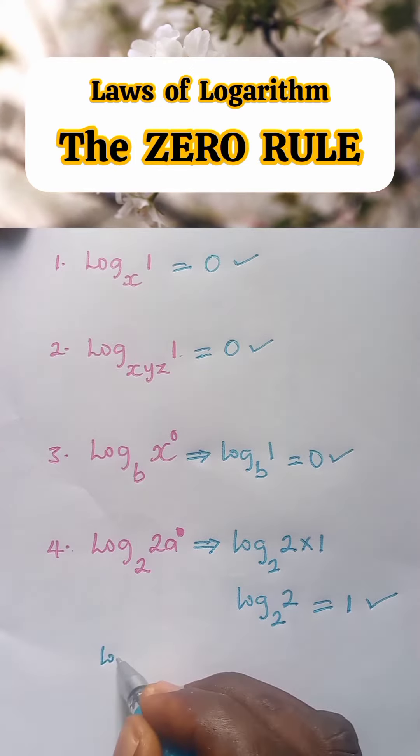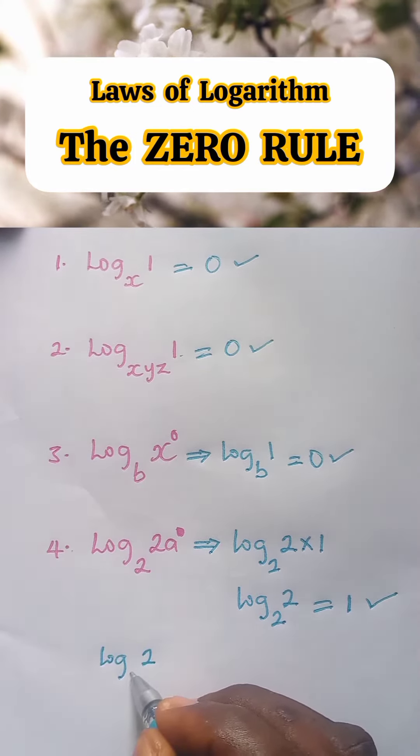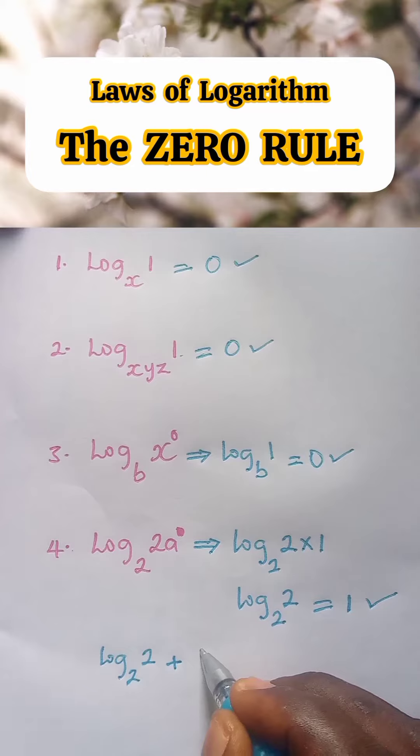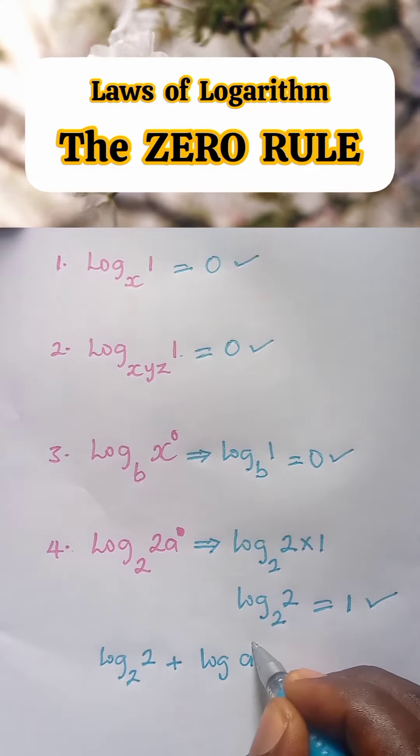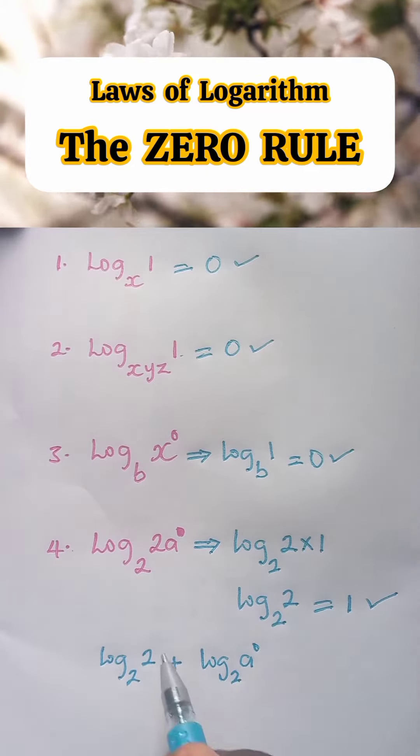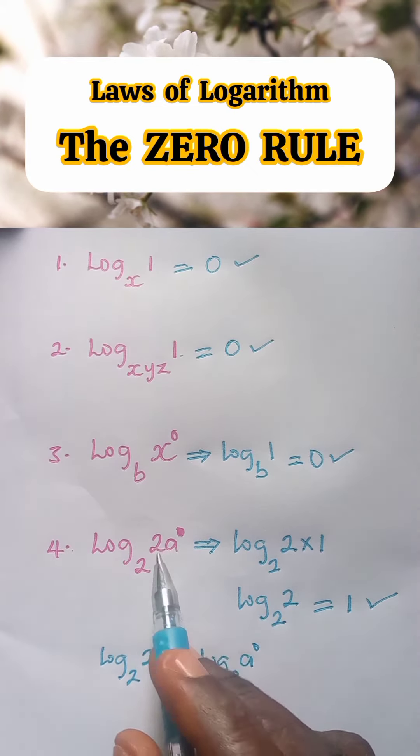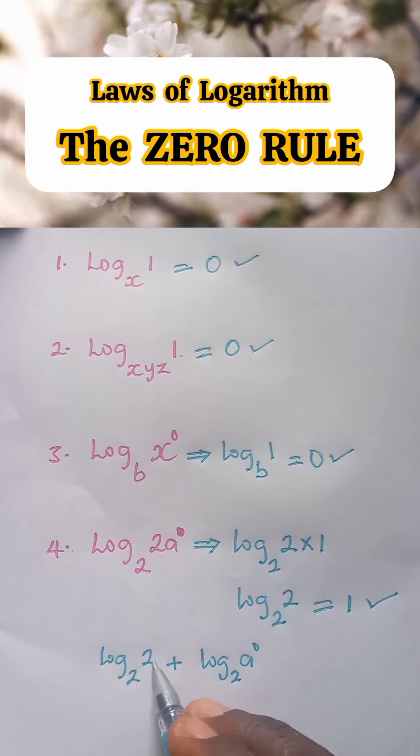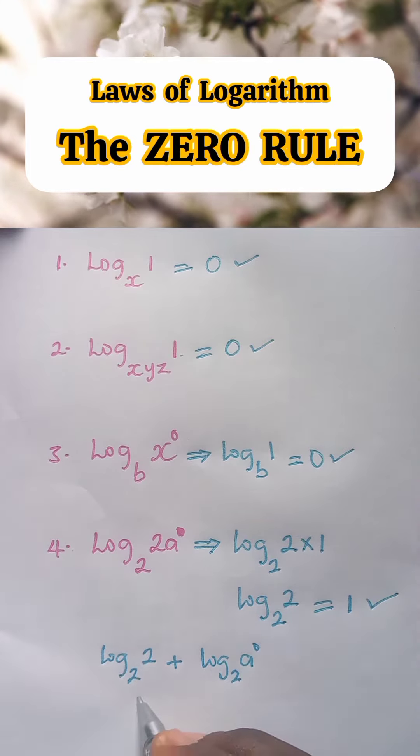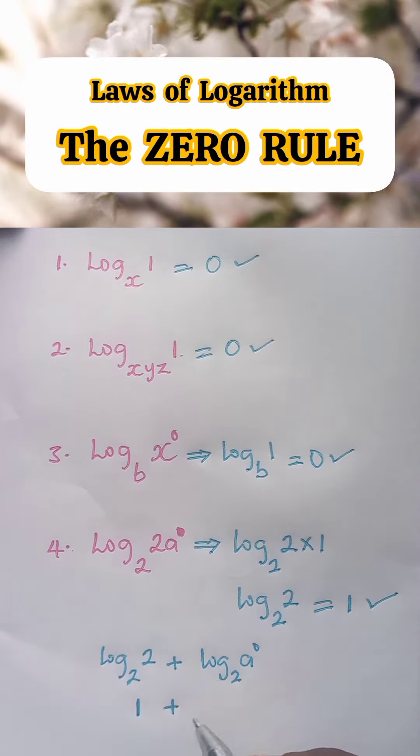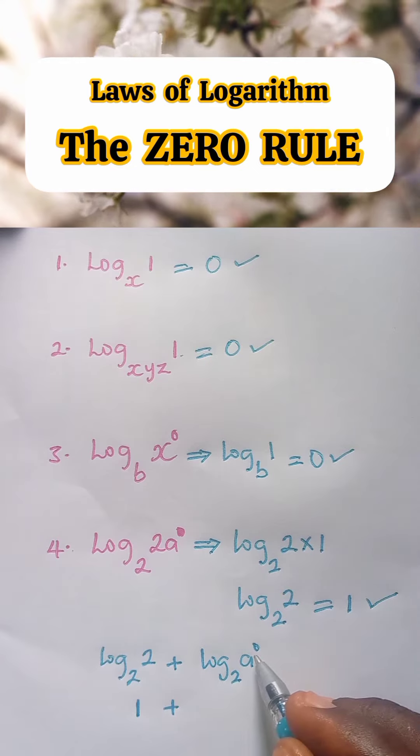This will give us log two to base two plus log a raised to power zero to base two. We are using addition sign because two and a raised to power zero are related by multiplication. So now, log two base two is equal to one plus log a raised to power zero.